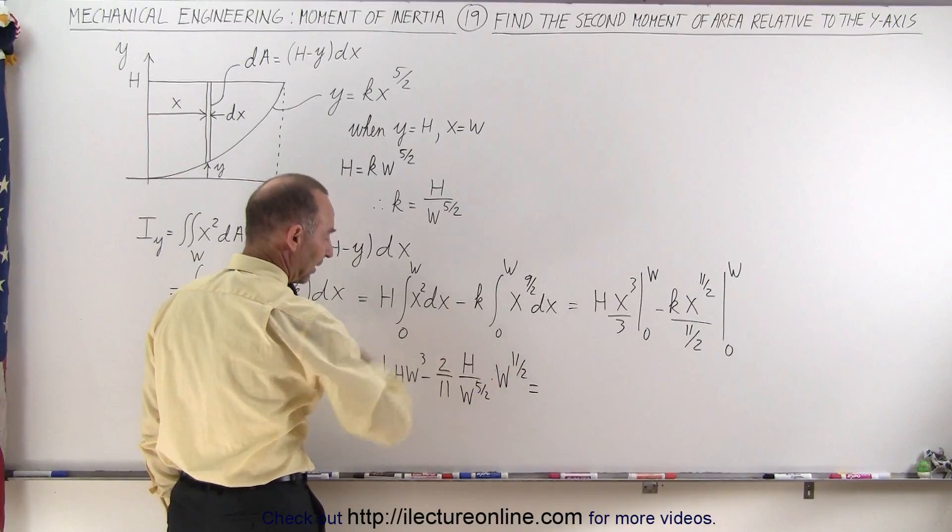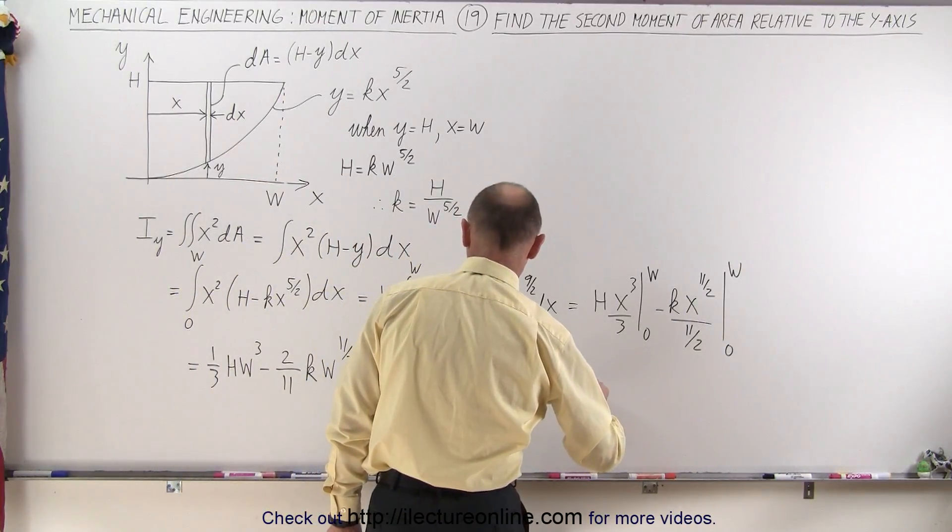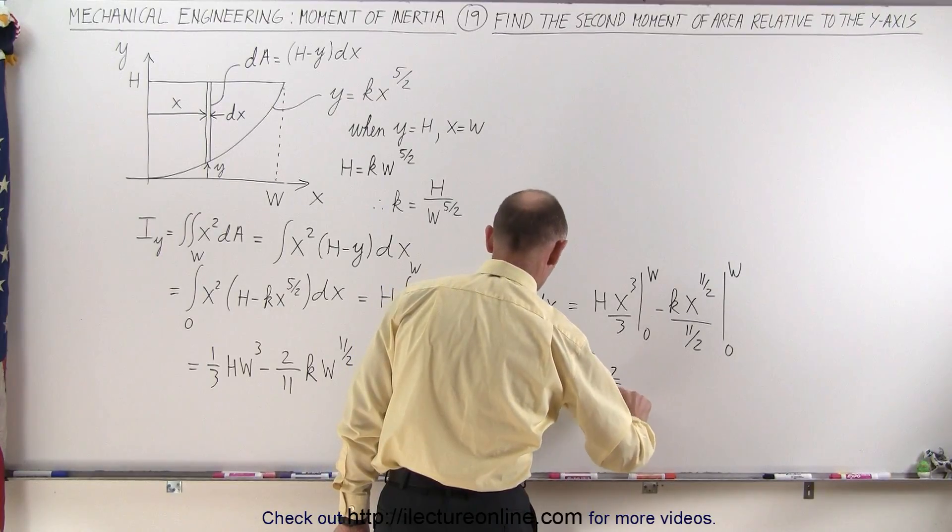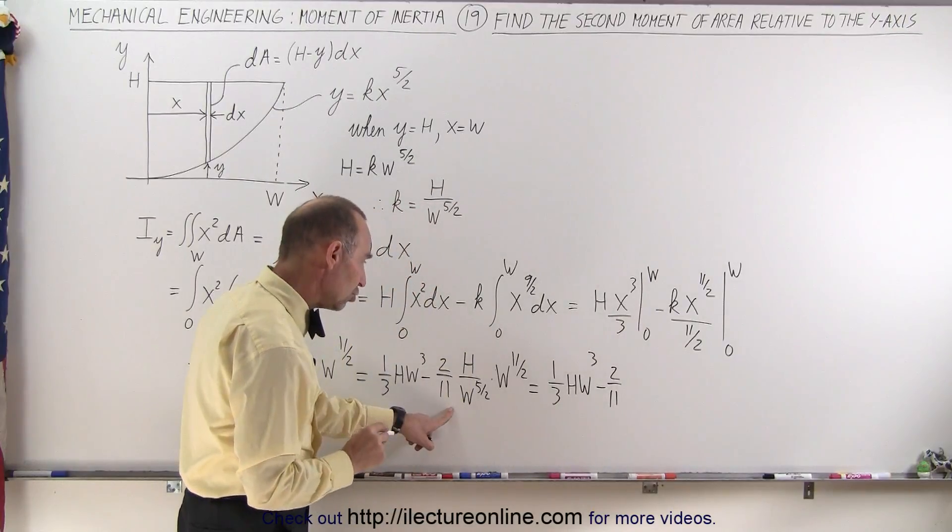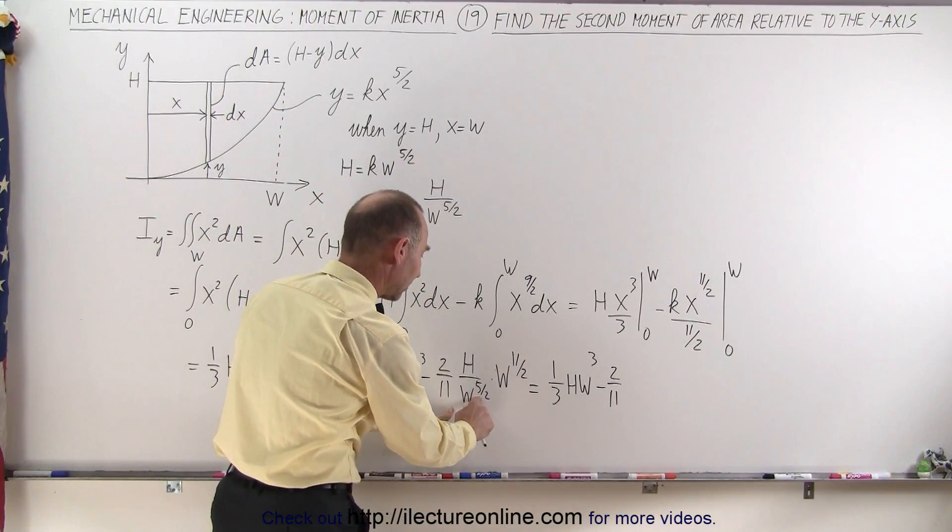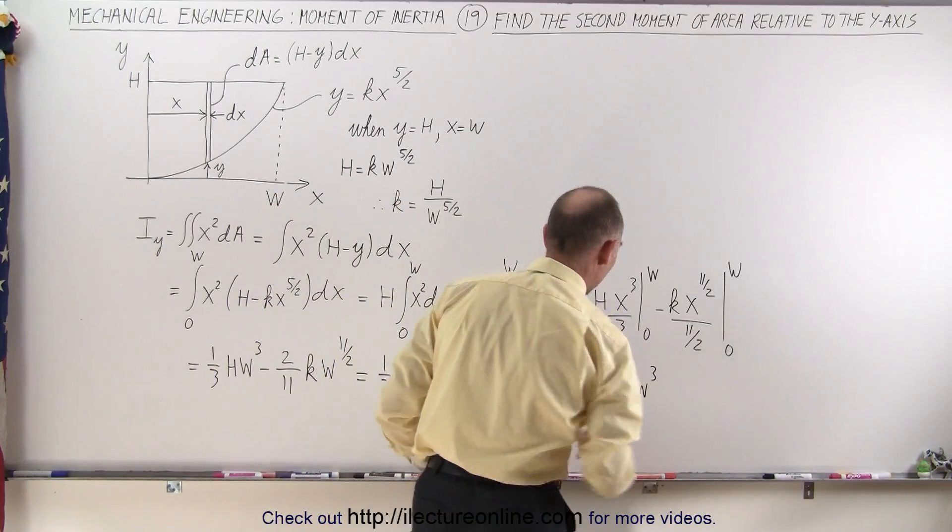And of course, we can simplify that, so this becomes equal to 1 third hw cubed minus 2 11ths, and this becomes hw to the, let's see, 11 minus 5 would be 6, 6 divided by 2 would be 3, that would be hw cubed as well.